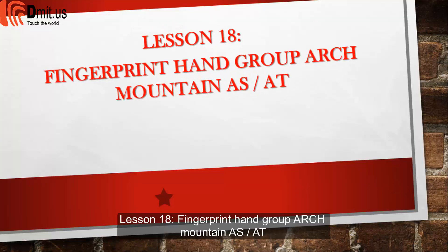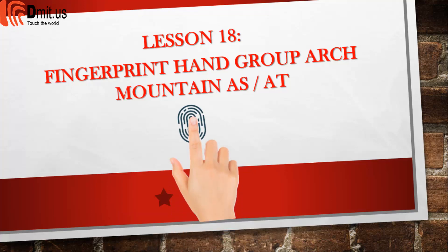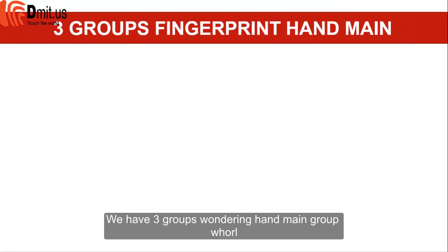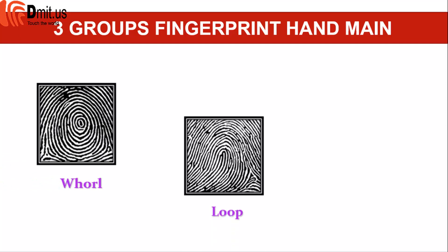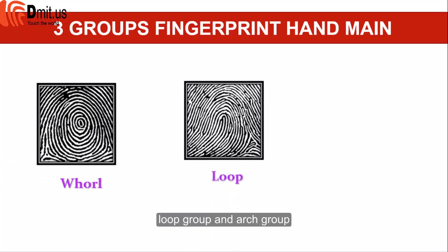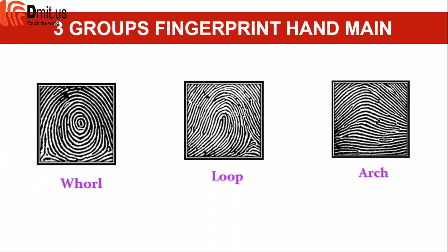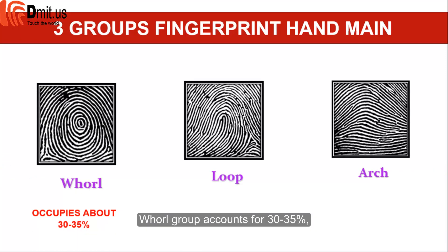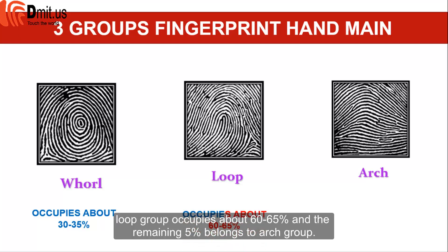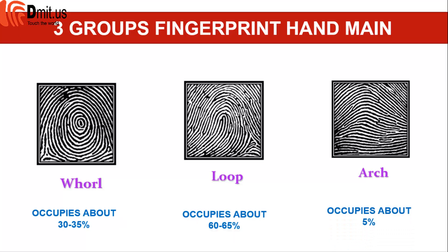Lesson 18: Fingerprint Hand Group — Arch Mountain, AS, AT. We have three main fingerprint groups: Whorl Group, Loop Group, and Arch Group. Whorl Group accounts for 30–35%, Loop Group occupies about 60–65%, and the remaining 5% belongs to Arch Group.